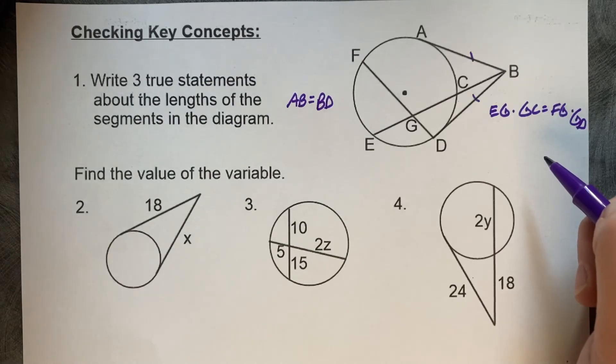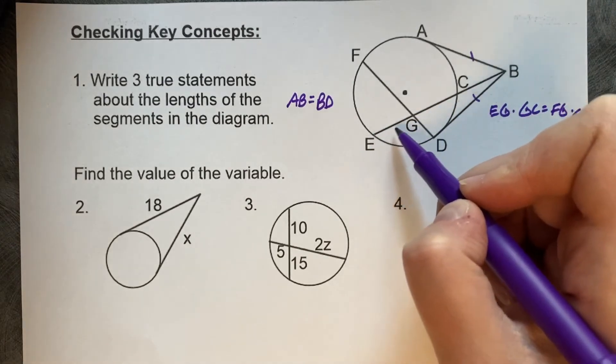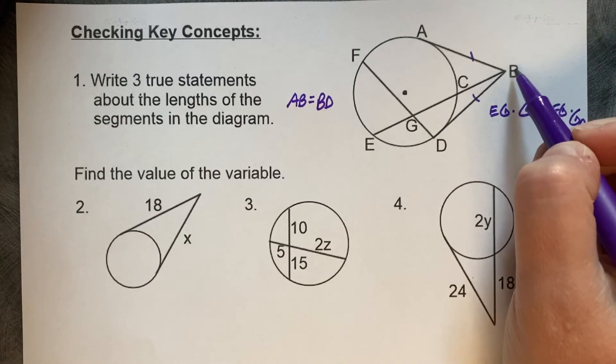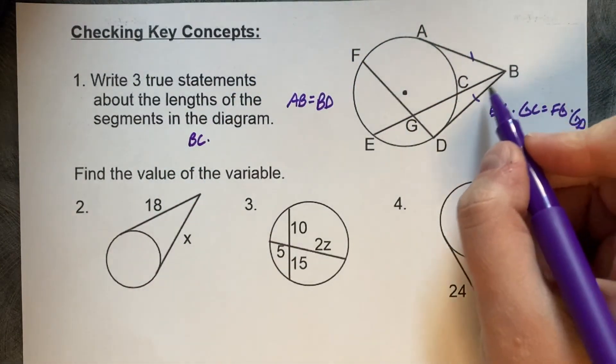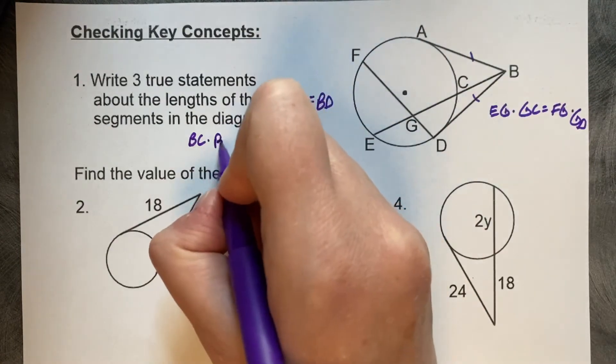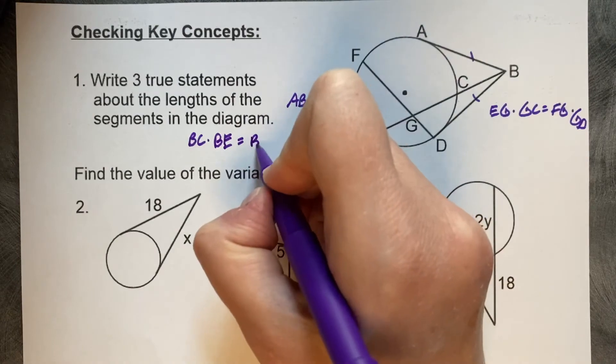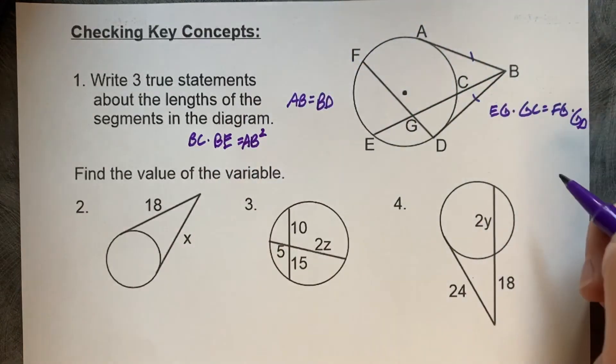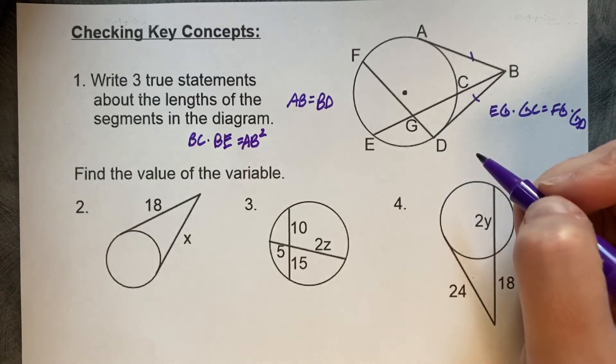We also have some tangents and secants. So let's look at this secant for a second. So if we have this one, we could say that BC times BE equals AB squared. And that's three statements. There are other statements you can make. You can work with the other tangent and a secant here if you want to, but those three are good.